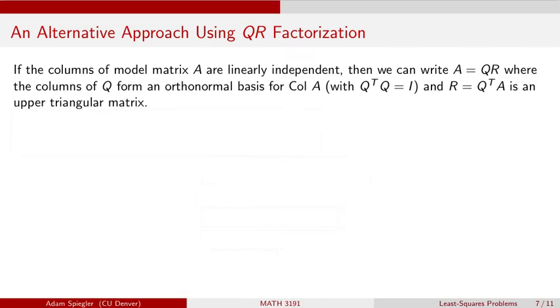Welcome everybody. In this video we're going to see what happens when we're trying to find least squares solution and our model matrix A has a bunch of linearly independent columns. In other words, the solution to that least squares problem is unique.